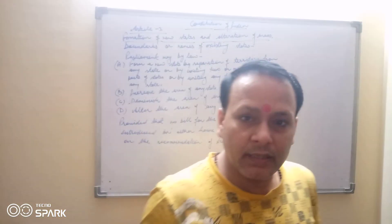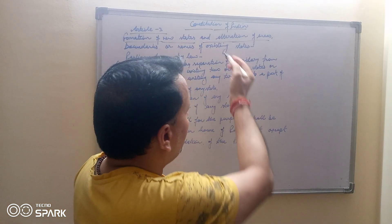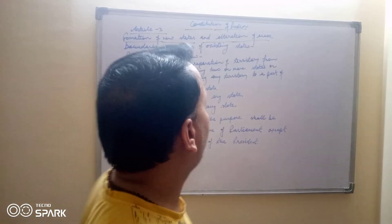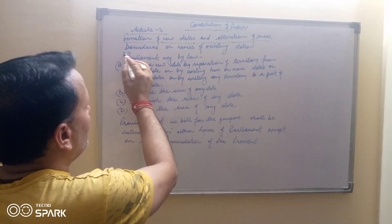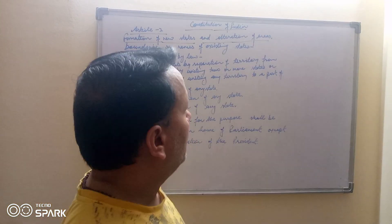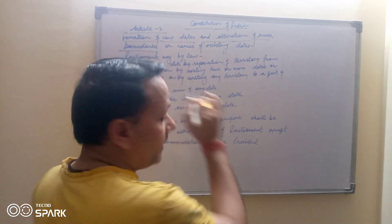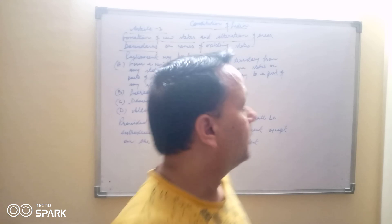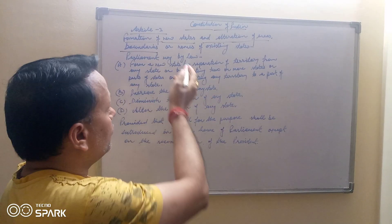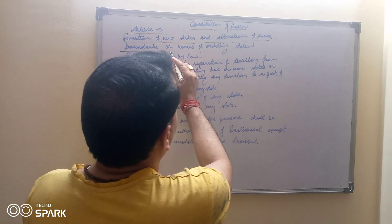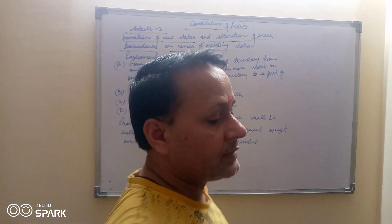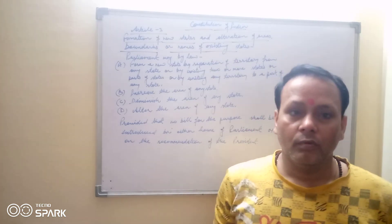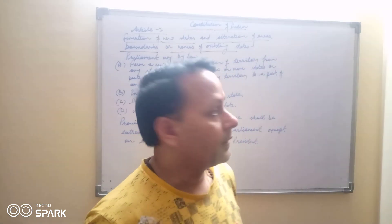New states kaise banega? And alteration of area — aur jo area hoga usmein changing kaise kiya jayega? Boundaries jo area hai aur jo boundary hai uski area. Internal part aur external part. Boundaries outer part. Names of existing states — aur jo naam hai particular state ka, usmein kya kiya ja sakta hai?